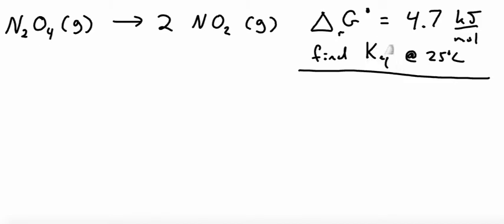We see that we want this, we have this, so we write the equation relating them. Delta G standard is equal to negative RT log of K. We solve this for K. So we divide both sides by negative RT and then take the exponential to get rid of the logarithm.